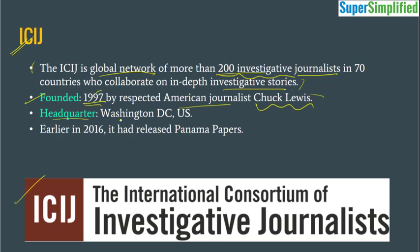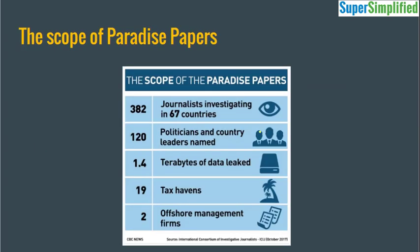ICIJ is headquartered in Washington, D.C., USA. Earlier in 2016, it had released the Panama Papers — so this agency was behind the Panama Papers also. Now, what is the scope of Paradise Papers? 382 journalists investigated this, located in 67 countries. 120 politicians and country leaders are named in this. 1.4 terabytes of data was leaked, which was investigated by ICIJ. The documents are pertaining to 19 tax havens and two offshore management firms.